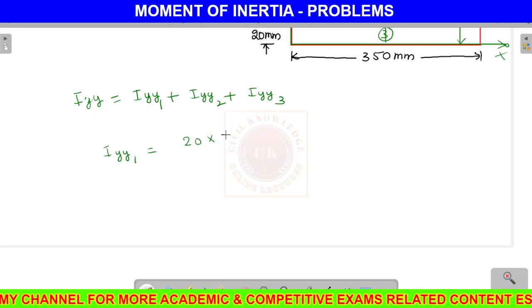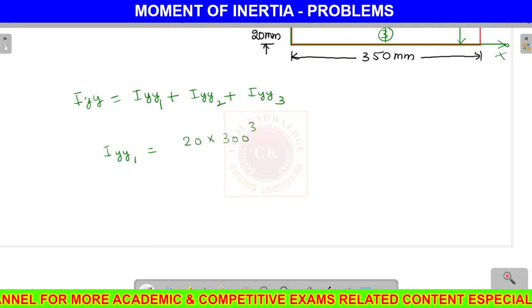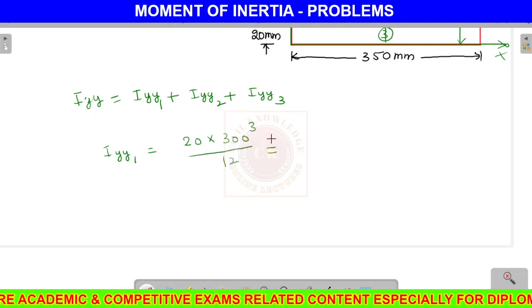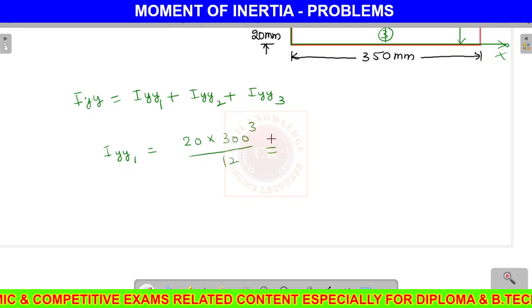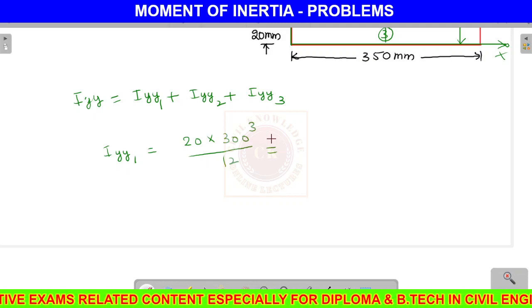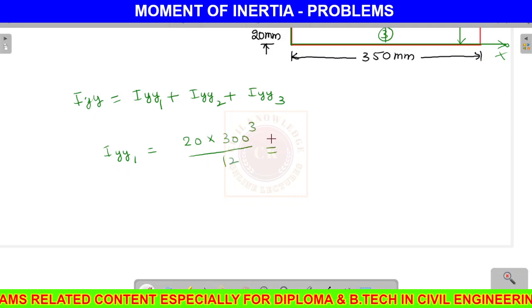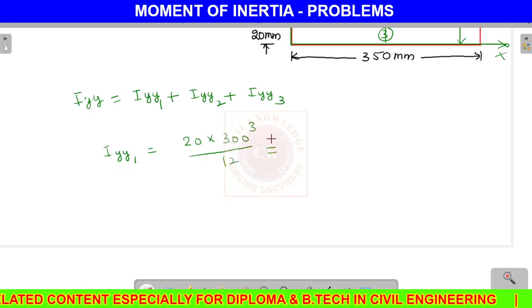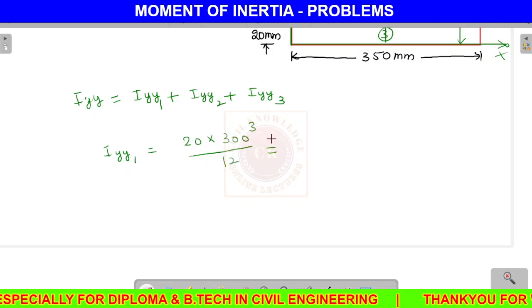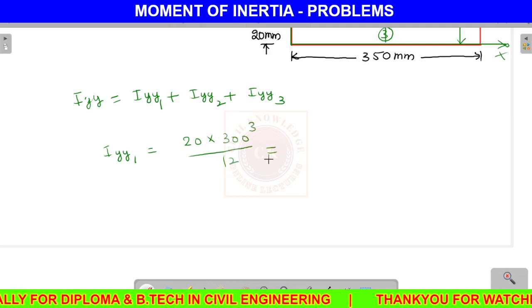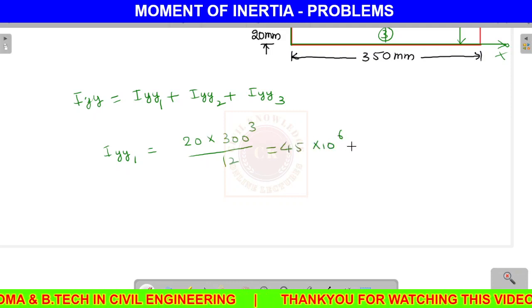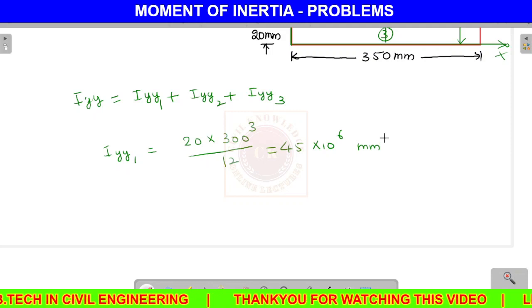For Iyy of the web: 20 into 300 cubed divided by 12. This is the basic rectangle formula (bd³/12). The result is 45 × 10⁶ mm⁴.